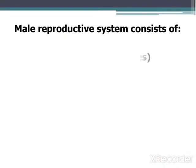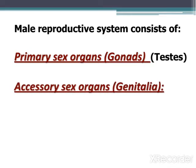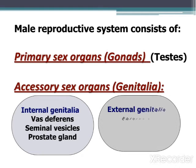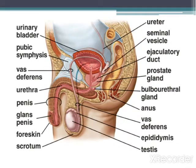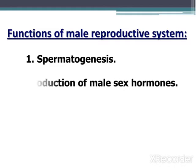The male reproductive system consists of primary sex organs or gonads, the testes, and accessory sex organs. Genitalia are divided into internal genitalia — including the vas deferens, seminal vesicles, and the prostate gland — and external genitalia, including the epididymis, penis, and scrotum. This is a diagram showing the male reproductive system.